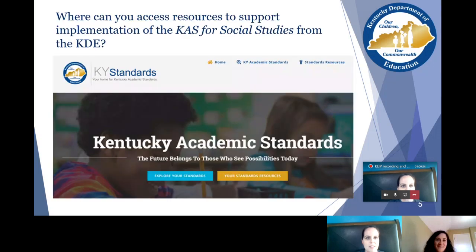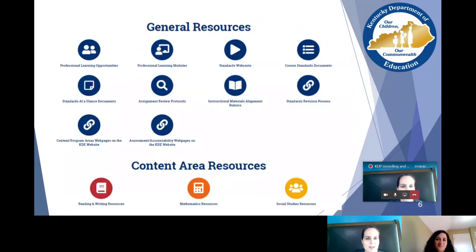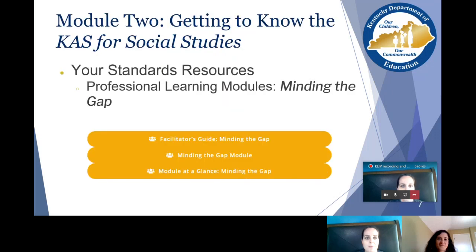To access resources that support implementation of the KAS for Social Studies, you can go to KYStandards.org. When you pull up that website, you can click to explore your resources. At the top in the blue icons there are general resources, and below you'll see the content area resources — social studies is the yellow icon. You would click that, and then under the professional learning modules you'll see Module 2, Minding the Gap.